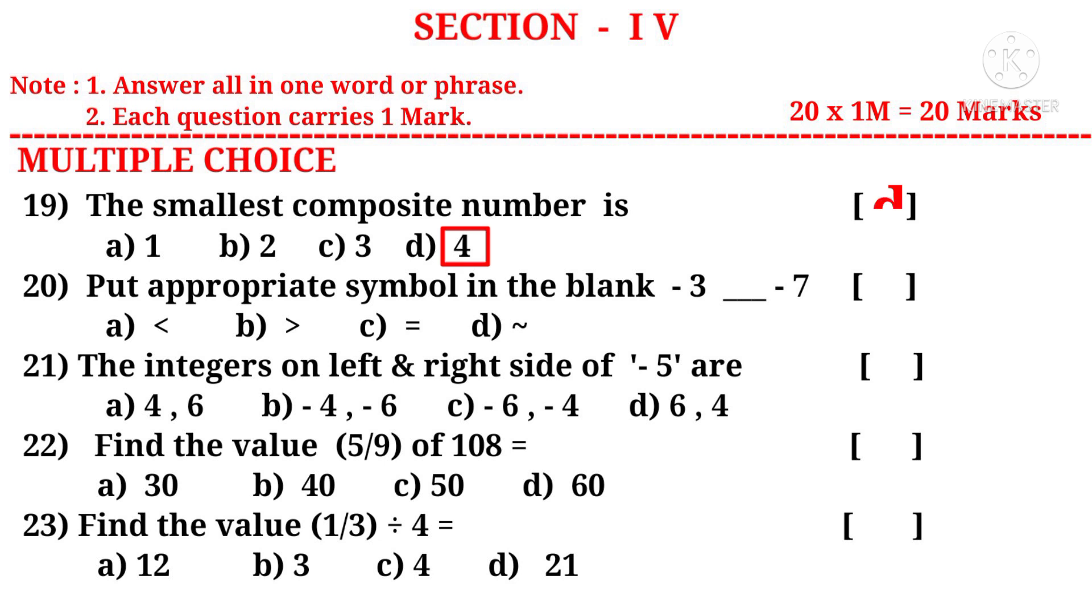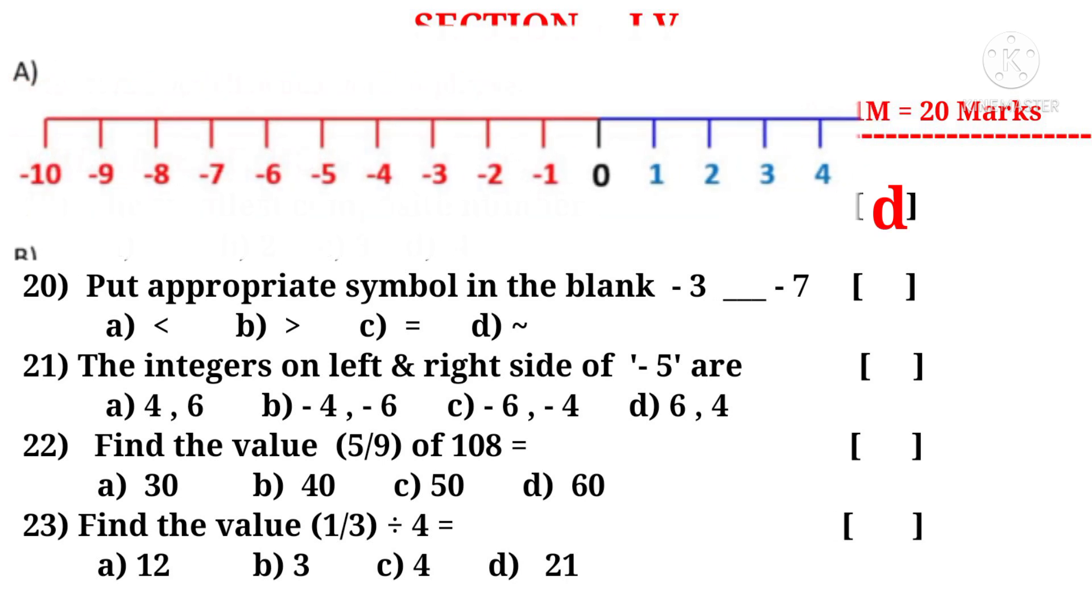Put appropriate symbol in the blank. Minus 3 dash minus 7. See the number line of negative numbers. Observe that minus 3 is on the right side of minus 7. So minus 3 is greater than minus 7. So put greater than symbol. So the correct choice is B.